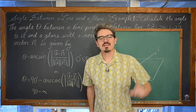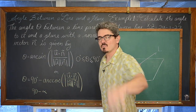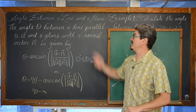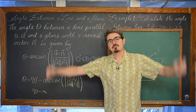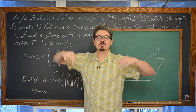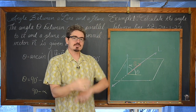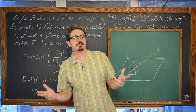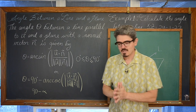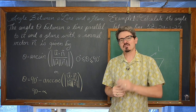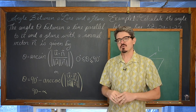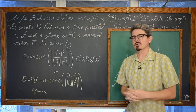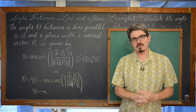Mr. Tarrou! In this math lesson we are going to do three examples of finding the angle of intersection between a line and a plane. Check out the description for three time stamps so you can jump ahead to any example, or just watch the whole video. You'll also find a link to my playlist involving all of the lessons I've done so far dealing with vectors.